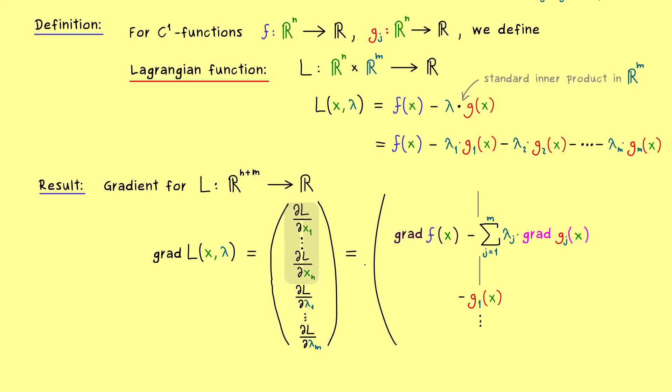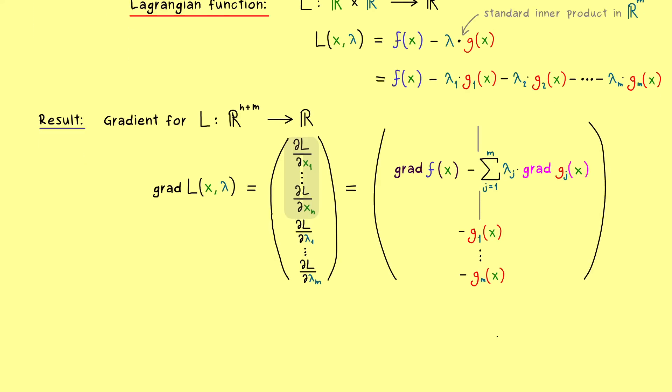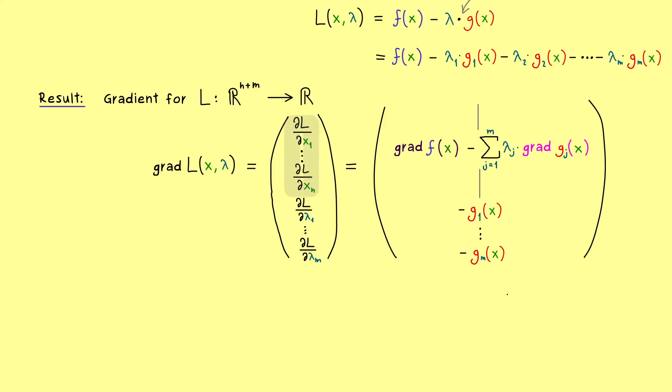Therefore, we have a similar thing for all the other lambda coefficients. And the last one here would be minus g m of x. In other words, we could also simplify these m components there, just by saying that this is minus g of x. So let's do that in the next step here. We just say that we have the first and the second entry.